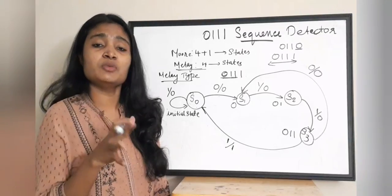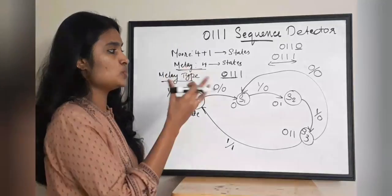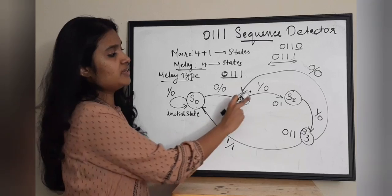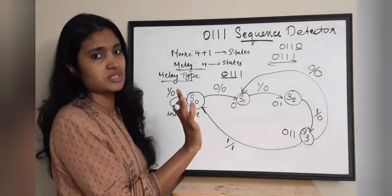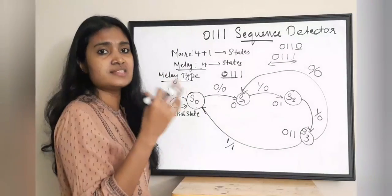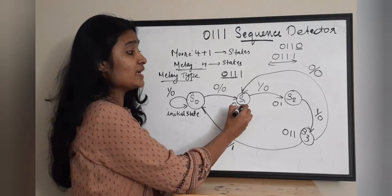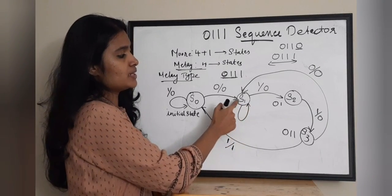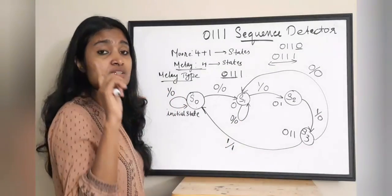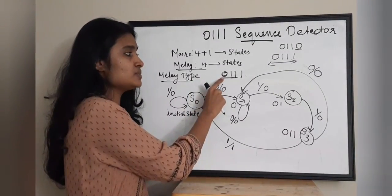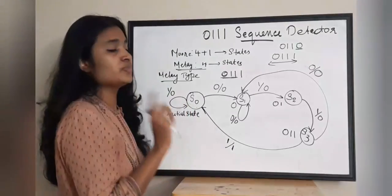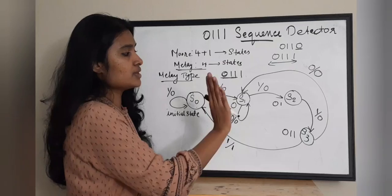Now completing the left-out cases. In S1 we took receiving a 1 which moves to S2. What if you receive a 0 in S1? S1 itself holds a single 0, so receiving a 0 again means you loop back to S1 with output 0. There are no two consecutive zeros in the sequence, so the state loops back on itself.